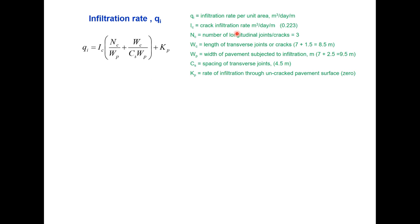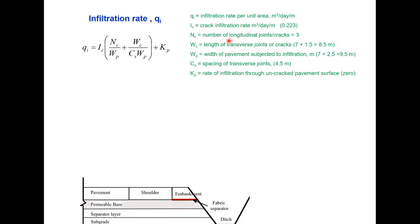Infiltration rate can be calculated using this equation where crack infiltration rate Ic is taken as 0.223 that is default value. Number of joints, cracks which is 3. There will be one joint here between the lanes, one joint here between the lane and the shoulder and the third joint at the paved shoulder here. Now Wc is the length of transverse joints that is 7 meter plus 1.5 meter hard shoulder that is 8.5 meter. Wp width of pavement subjected to infiltration that is the total width 9.5 meter and spacing of transverse joints 4.5 meter. And Kp value can be taken 0 and you can calculate this Qi is 0.115 meter cube per day per meter square.